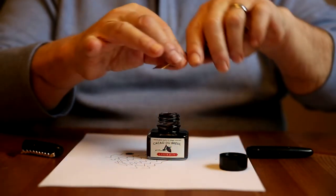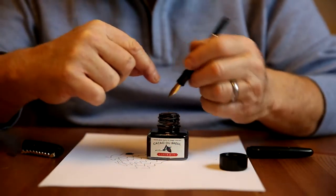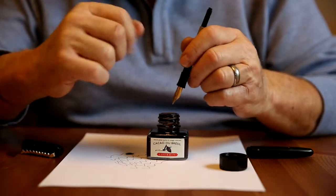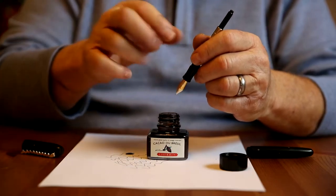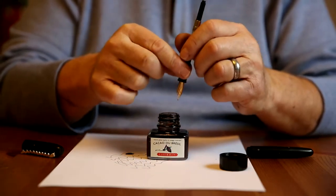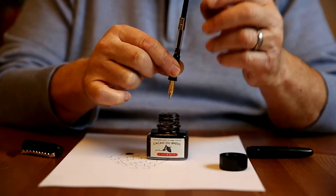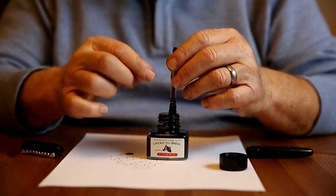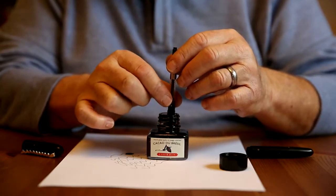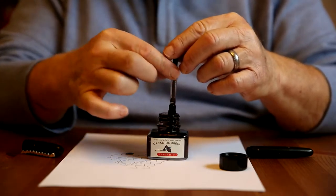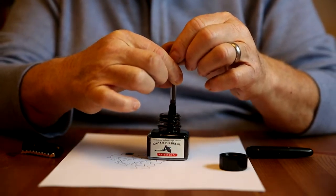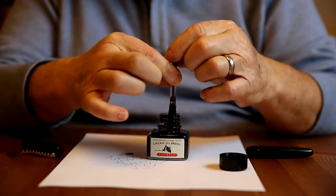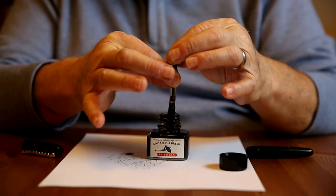You're going to insert the nib into the ink up above the edge of the section, allowing suction to be created when you withdraw the plunger in the reservoir. Place the nib in the ink, hold the converter with your fingers, and then very slowly begin to turn the end of the converter clockwise.